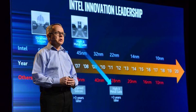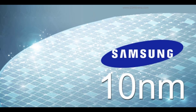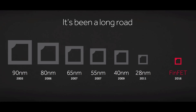The 10nm class denotes chips made using process technologies between 10 and 20 nanometers. Samsung first released their version of a 10nm process node in 2017. While the roadmap has been based on the continuing extension of CMOS technology, even this roadmap does not guarantee that silicon-based CMOS will extend that far.